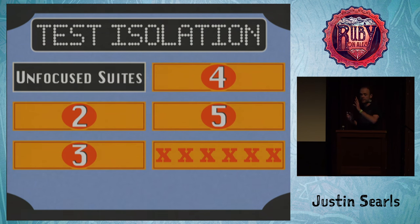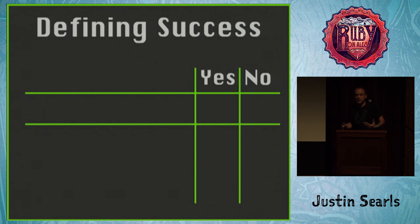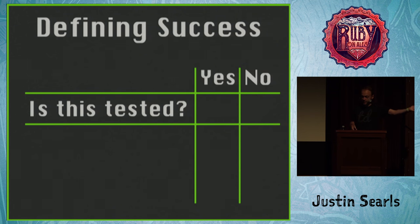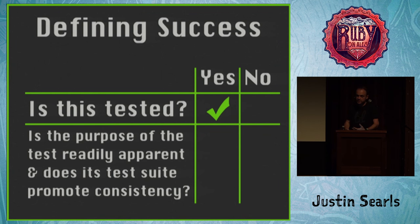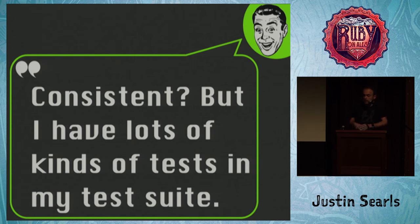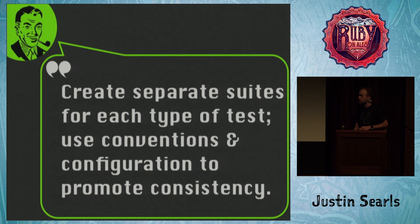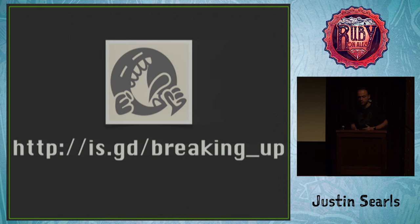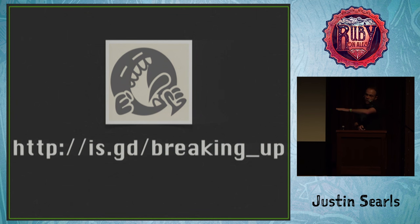Let's move on to talking about test isolation. The first thing people really mess up is not having a very clear focus in their test suites. When teams are defining what success looks like, most are happy to just ask 'is our stuff tested, yes or no?' But there are so many more nuanced questions: is the purpose of every test readily apparent, does the test suite promote consistency so we can maintain it? Most common pushback is 'I have all kinds of different tests to write because my system does a million things.' But there are probably three, four, or five different types of tests that would cover 80% of what you need. So I encourage them to create separate test suites — separate directory, separate configuration, separate conventions for every type of test.